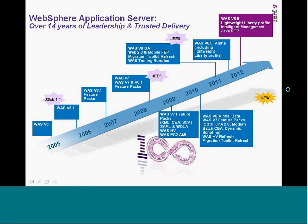So where we are today is that 8.5 is the latest GA release of the application server. It includes this thing called the Lightweight Liberty Profile, which I'm going to go into some detail on. It also has something called Intelligent Management, which if you've run into the product WebSphere Virtual Enterprise before, is pretty much analogous to that — it gives you a lot of the capabilities that were in VE. And to do Liberty, we used the Java 7 SDK, so you're able to use the capabilities in that.